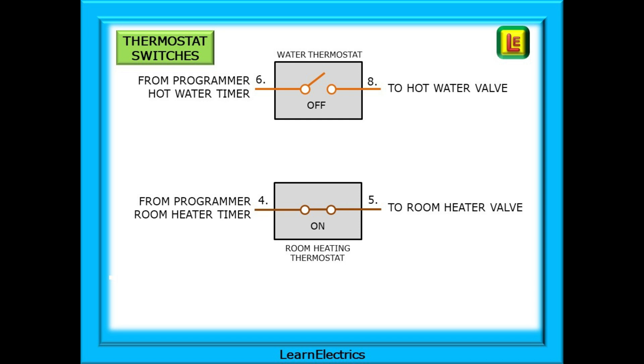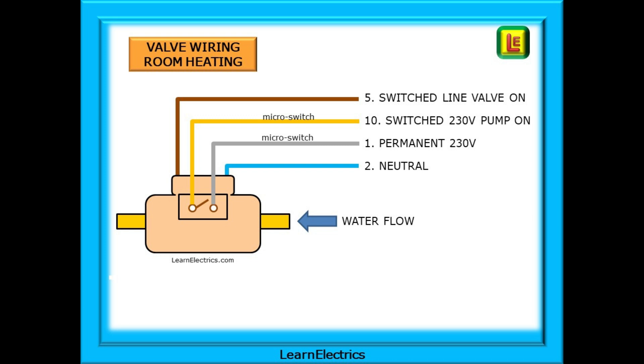Here we have shown the room heating switch is closed, in other words on and asking for heat. The output from the thermostat is connected to the switched line wire, the brown wire. There is already a permanent neutral wire at the valve. If the room heating thermostat outputs 230 volts onto the brown wire the valve will rotate and open the port for the water.